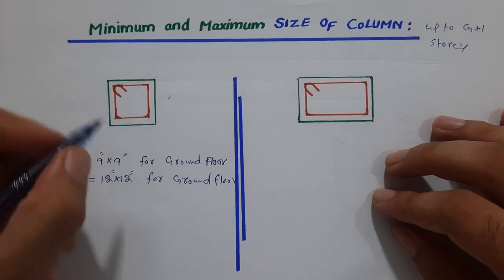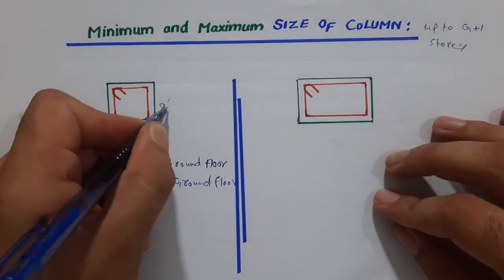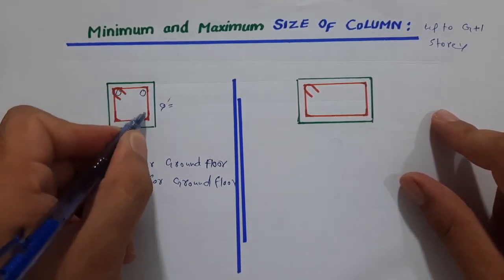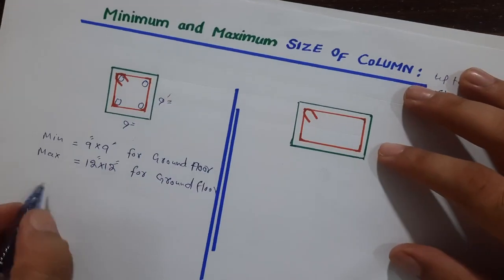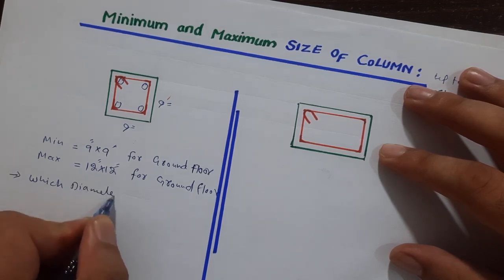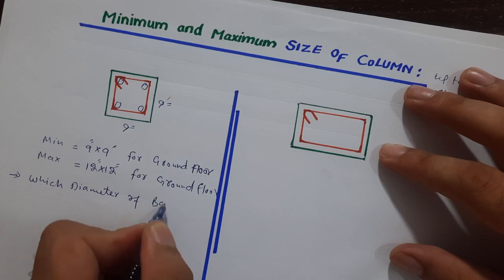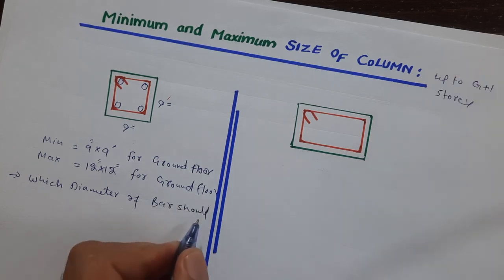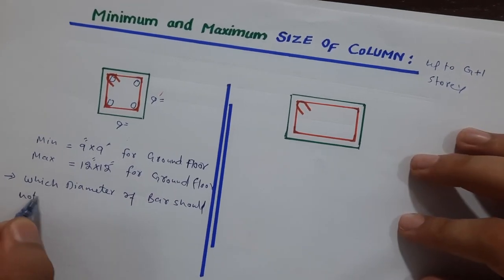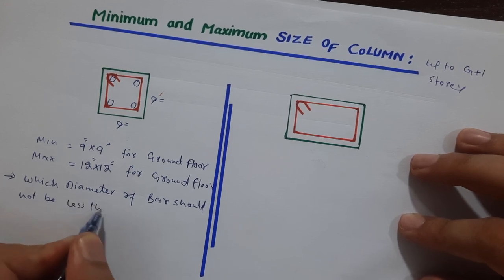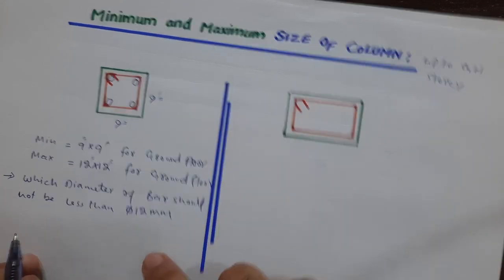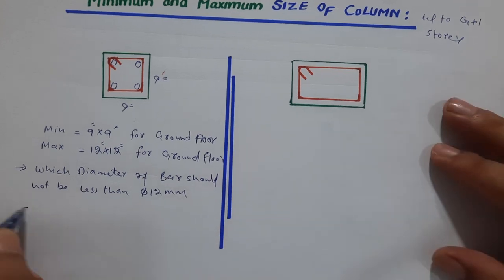As discussed, the minimum size is 9 by 9 inches. Inside this column for G plus one, you should use four numbers of steel rods, with a diameter of bar that should not be less than 12 millimeter. So four numbers of bar and diameter should not be less than 12 millimeter.